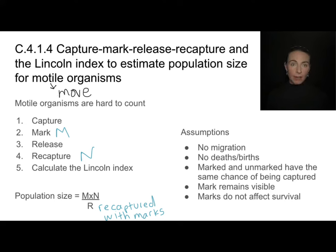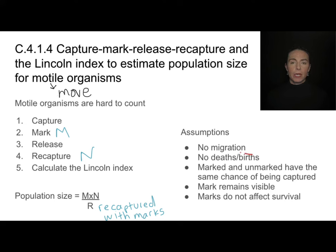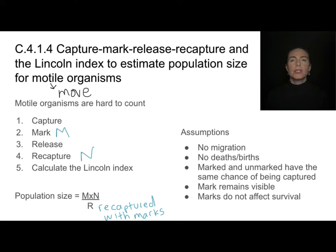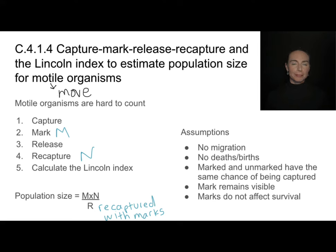The Lincoln index assumes several things. First, it assumes there is no migration — which might work for a pond but could be tough for open land or the ocean. It also assumes there have been no deaths or births, so it doesn't account for new organisms or ones that died. It also assumes that marked and unmarked individuals have the same chance of being captured — an assumption that isn't always true. Additionally, it assumes the mark remains visible and hasn't come off.